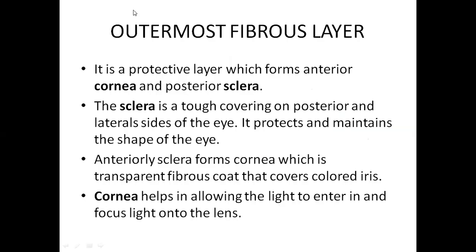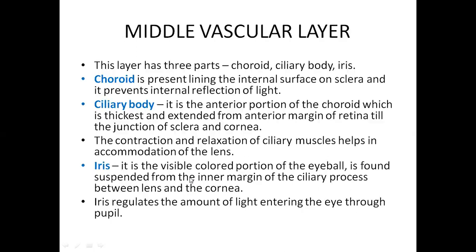The outermost fibrous layer is made up of the sclera and cornea. The sclera is the tough covering on the posterior and lateral sides of the eye, and the cornea helps light to enter and focus onto the lens. The middle vascular layer is mainly made up of three parts: the choroid, the ciliary body, and the iris.